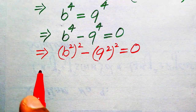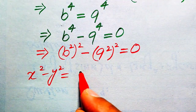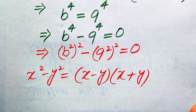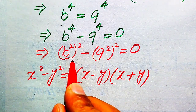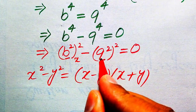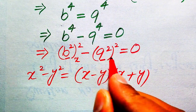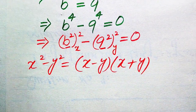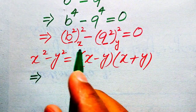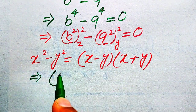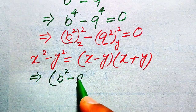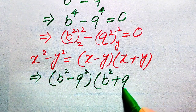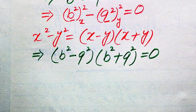Here we use the algebraic formula: x² minus y² equals (x minus y)(x plus y). The base of the first term is x, so b² equals x, and the base of the second term is y, so 9² equals y. Applying this formula, our equation is written as (b² minus 9²)(b² plus 9²) equals 0.